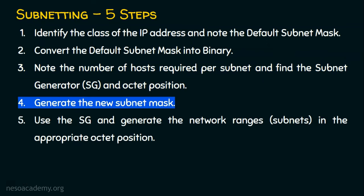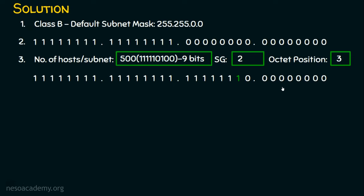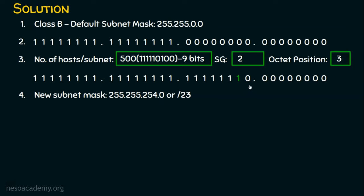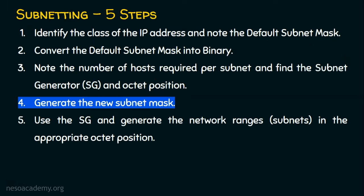Let's move on to step number four: generating the new subnet mask. We have already generated it. When all bits are one in an octet it's 255, and in the third octet the place value of 1 is unused, so the value is 128+64+32+16+8+4+2 = 254. The fourth octet is 0. So the new subnet mask is 255.255.254.0. Counting the ones: 8+8+7 = 23, so in slash notation this is /23. Step number four is done.